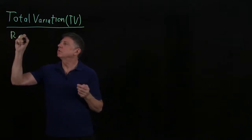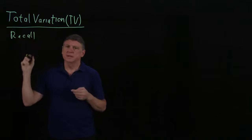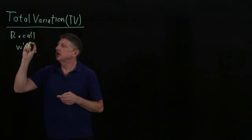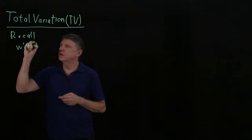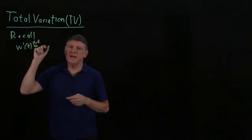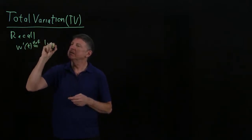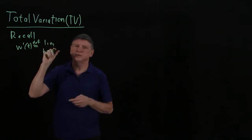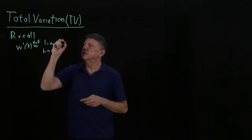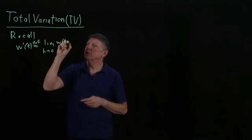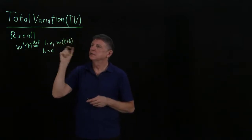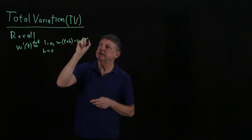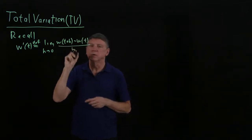Let's recall that the derivative of a function was defined as the limit as a scalar value h approaches zero of the function at the argument plus the scalar minus the function at the argument over the scalar.